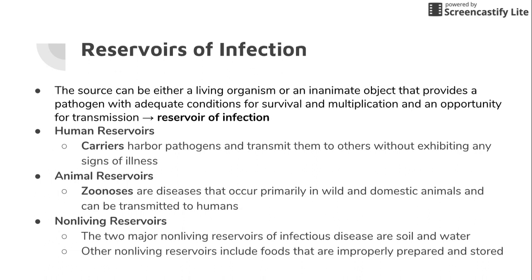With animal reservoirs, they can be wild or domesticated animals. For example, rabies can be transmitted by dogs, cats, raccoons, armadillos, and squirrels, while Lyme disease comes from ticks. There are about 150 different kinds of diseases caused or carried by animals, and these are called zoonoses — diseases that occur in animals and can then be transmitted to humans.